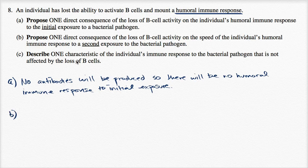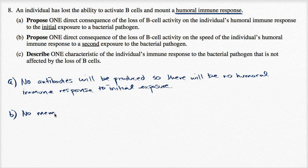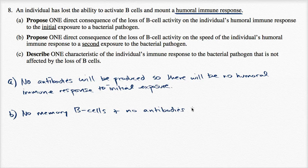Part B: propose one direct consequence of the loss of B cell activity on the speed of the individual's humoral immune response to a second exposure to the bacterial pathogen. There will be no memory B cells and no antibodies specific to that pathogen for the second exposure.